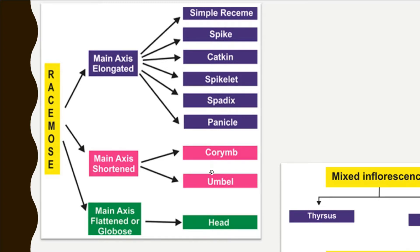In racemose inflorescence, the peduncle possesses a terminal bud capable of growing continuously and producing flowers laterally. It is further divided into three types according to the growth pattern of the main axis. The first type is main axis elongated, which is classified into simple raceme, spike, catkin, spikelet, spadix, and panicle.